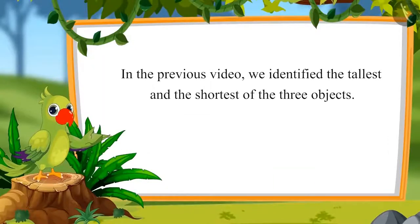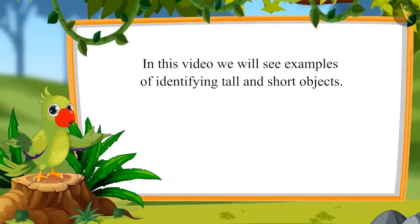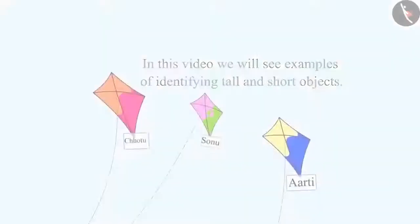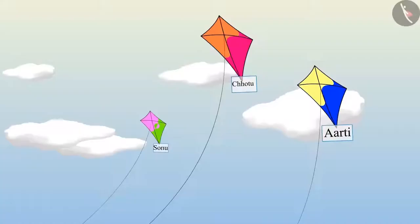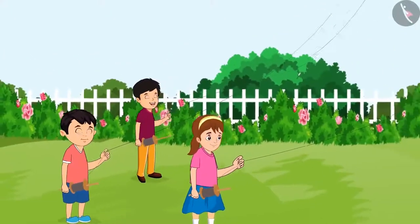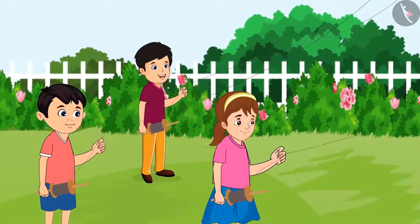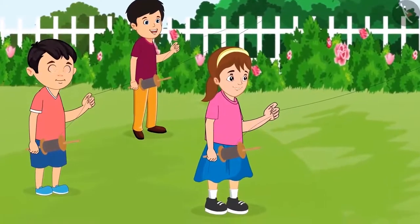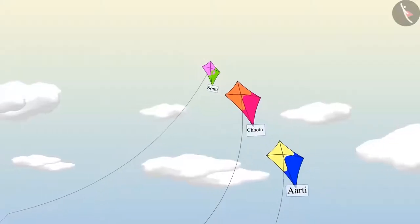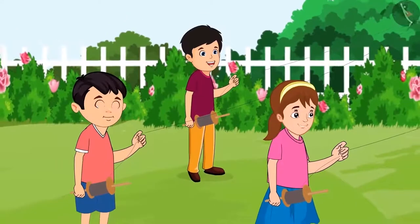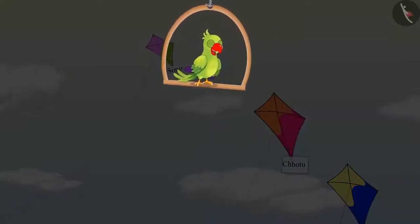So, children, in the last video, we identified the tallest and the shortest of the three objects. In this video, we will see examples of identifying tall and short objects. Today, Chotu, Aarti and Sonu have come to fly kites in the park. Today, my kite will fly the highest. When three of them were flying kites, Chotu said: Look, my kite is flying high. Okay, now I will fly my kite higher than your kite. Sonu was silently flying his kite and his kite started flying high. Wow, Sonu, your kite is flying the highest of all three of us.